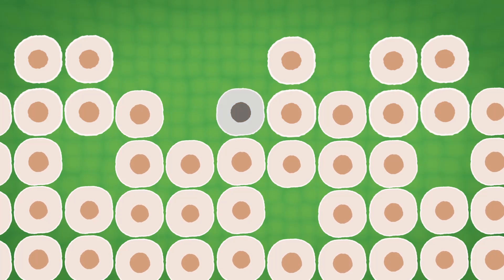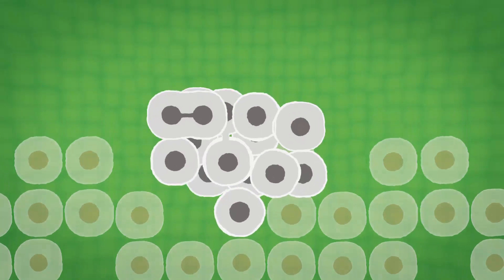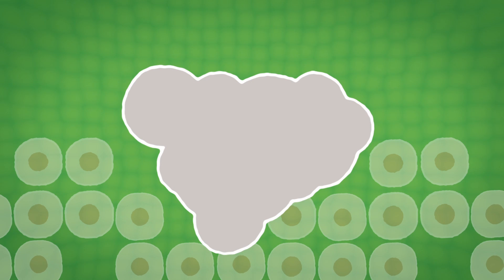Sometimes the signals go wrong and the cells become abnormal. The cells keep dividing, making more and more abnormal cells. These cells form a lump called a tumour. As a tumour gets bigger, it develops its own blood supply.